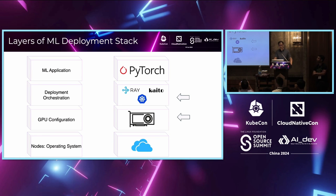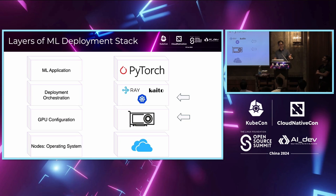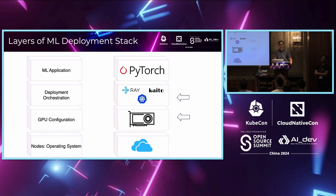At a high level, you have the ML application that can be written in PyTorch or TensorFlow. Then you have a deployment orchestration layer, which is subdivided into two layers, where you have tools like KubeRay operator or Kaito, which run on top of Kubernetes. And then you have the GPU configuration layer below that, and then you finally have nodes in the operating system, which are either managed by the cloud provider or your on-prem infra team.